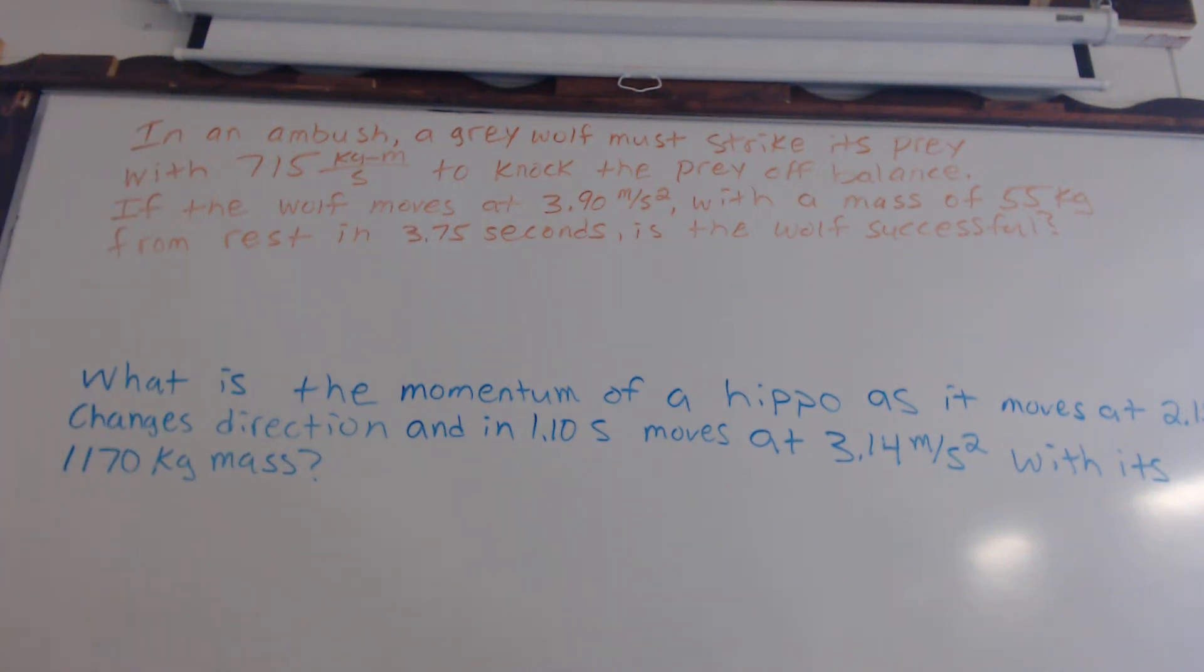Okay, here is part two. So perhaps you want to go ahead and hit pause and you can go ahead and write these problems down. Actually, I'll read them first and then that way you can kind of see what the wording is here. In case there's a glare, in an ambush, a gray wolf must strike its prey with 715 kilograms per meter per second to knock the prey off balance. If the wolf moves at 3.90 meters per second squared with a mass of 55 kilograms from rest in 3.75 seconds, is the wolf successful?